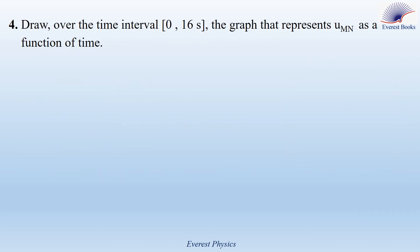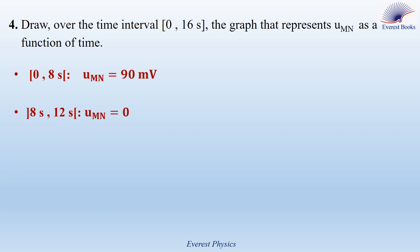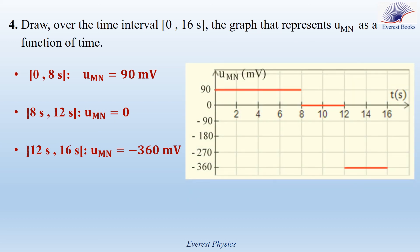Part 4. Draw the graph of U_MN as a function of time over the interval 0 to 16 seconds. There are three intervals: during 0 to 8 seconds, U_MN = 90 mV; during 8 to 12 seconds, U_MN = 0; during 12 to 16 seconds, U_MN = −360 mV. The horizontal axis represents time with one division equal to 2 seconds, and the vertical axis represents voltage with one division equal to 90 mV. U_MN is constant during each time interval.